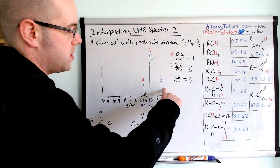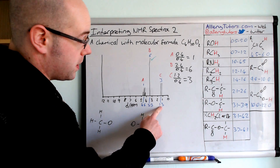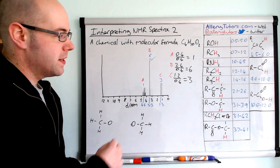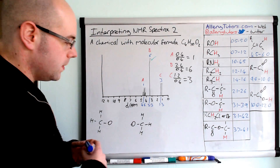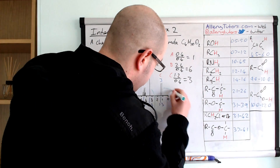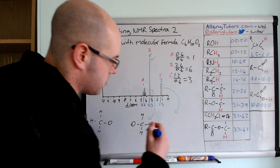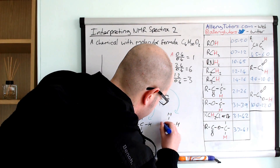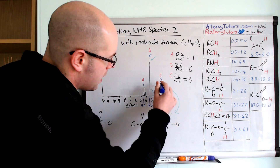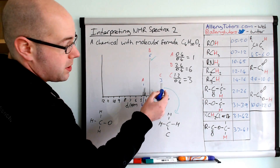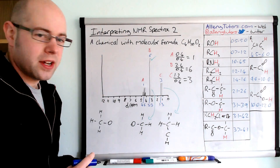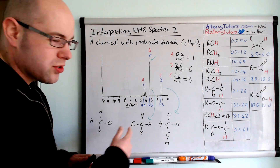Moving on to peak C, which has a shift of 1.3 and is a doublet, meaning it's next to a carbon with one hydrogen. This peak has an integration of 3, so it's a CH3 group with three hydrogens. Because it's a doublet, the carbon next to it has only one hydrogen on it. So we have a CH3 group bonded to a carbon that has only one hydrogen — that's our potential structure for this part of the molecule.